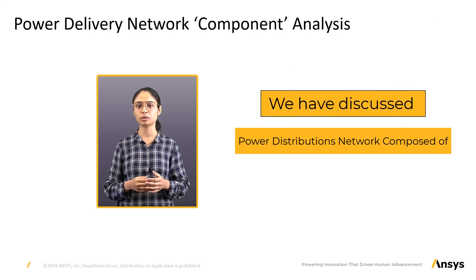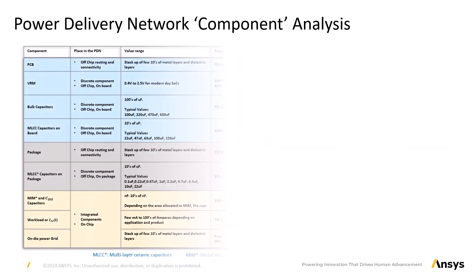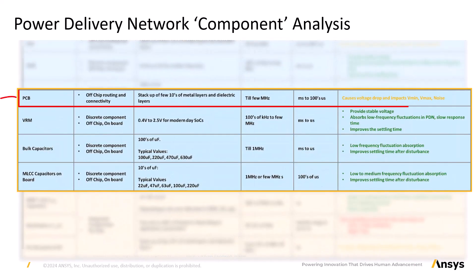Power distribution network component analysis: in this lesson so far we have seen what a power distribution network is composed of. From here on we will discuss the role each component plays in the PDN and how the industry analyzes and optimizes the different components of the PDN. PCB and package routings provide off-chip electrical routing and connectivity. These off-chip power routings are called power and ground planes. The PCB or package is typically a stack-up of tens of metal layers sandwiching dielectric layers. Their parasitic elements impact the voltage rail from a few megahertz to tens of megahertz, degrading the Vmin and Vmax and noise values of the voltage rail.